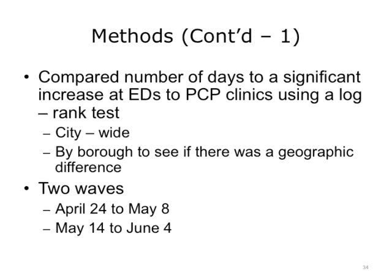The number of days of a significant increase in ILI at EDs and primary care practices were compared using a log-rank test, which accounts for the fact that not all facilities experienced an increase. The comparison was done citywide and repeated by borough to examine geographic differences, since the outbreak began in Queens. The analysis covered two waves: the first between April 24th and May 8th, during which there was heavy media coverage but relatively few people were truly sick; and the second between May 14th and June 4th, when many more people were truly getting sick.